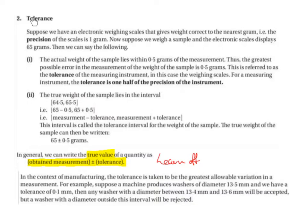Next, you need to understand what tolerance and precision mean. The tolerance is one half of the precision of an instrument — this one half is important. In general, we can write the true value of a quantity as the obtained measure plus or minus the tolerance. We need to learn this off.